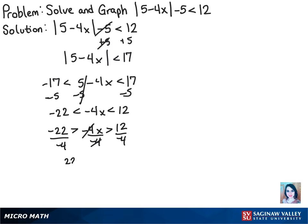And that gives us 22 over 4 is greater than x is greater than negative 3. Let's do a little bit of simplifying and rearranging here. I'm going to flip the equation so that the smallest number is on the left side. So that will read negative 3 is less than x is less than, and then I'm going to reduce that 22 over 4 to 11 halves.